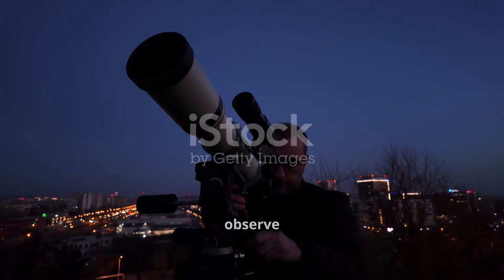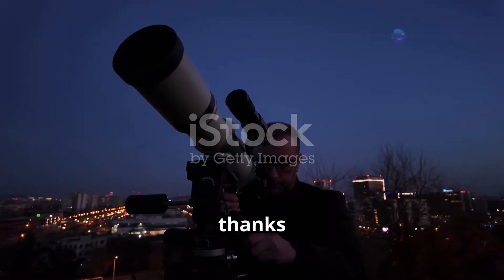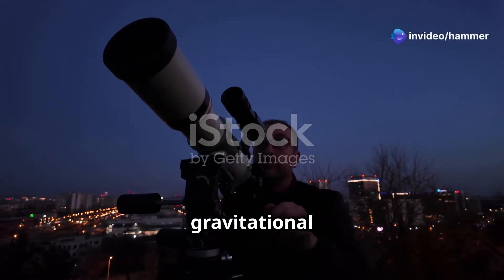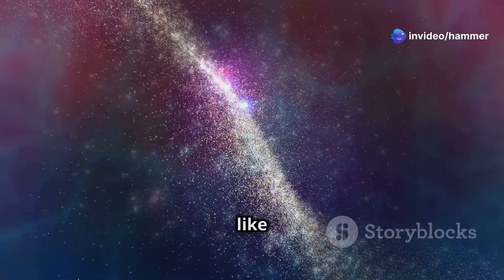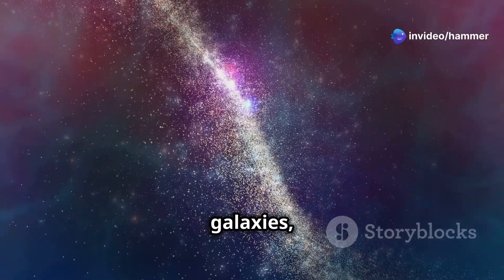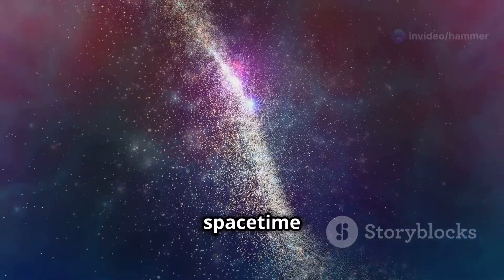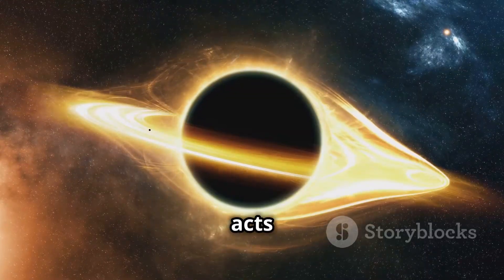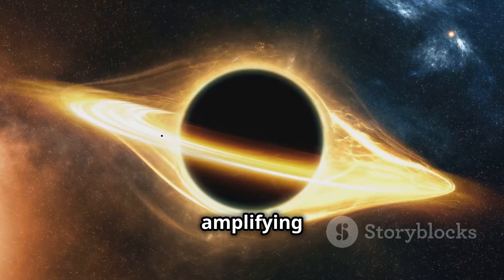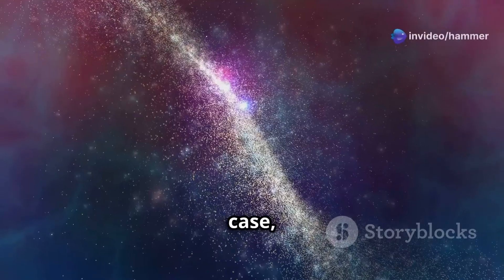The JWST was able to observe this distant black hole thanks to a phenomenon known as gravitational lensing. Massive objects like galaxies or clusters of galaxies can bend the fabric of space-time around them. This bending acts like a magnifying glass, amplifying the light from objects behind them.